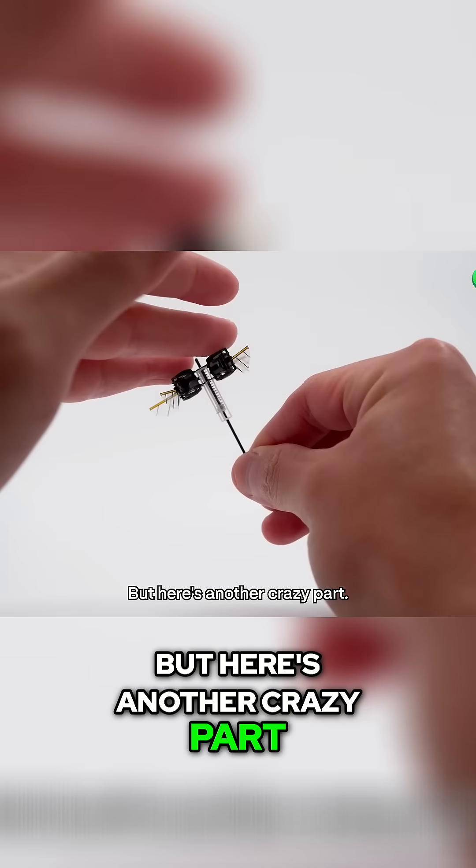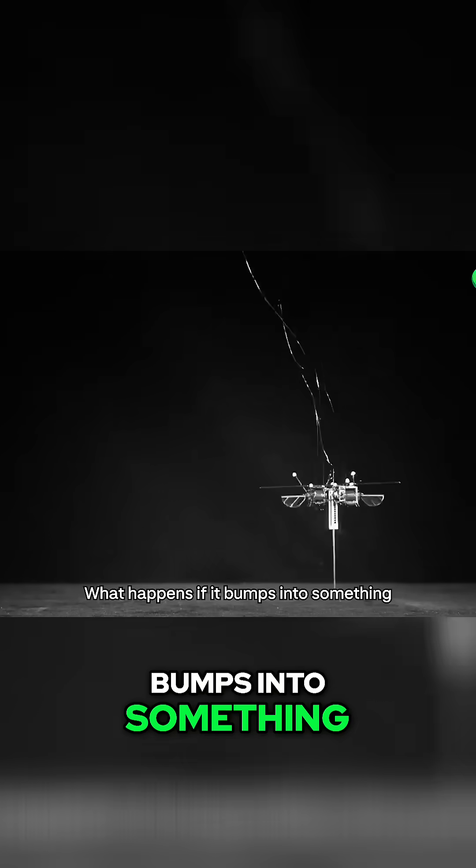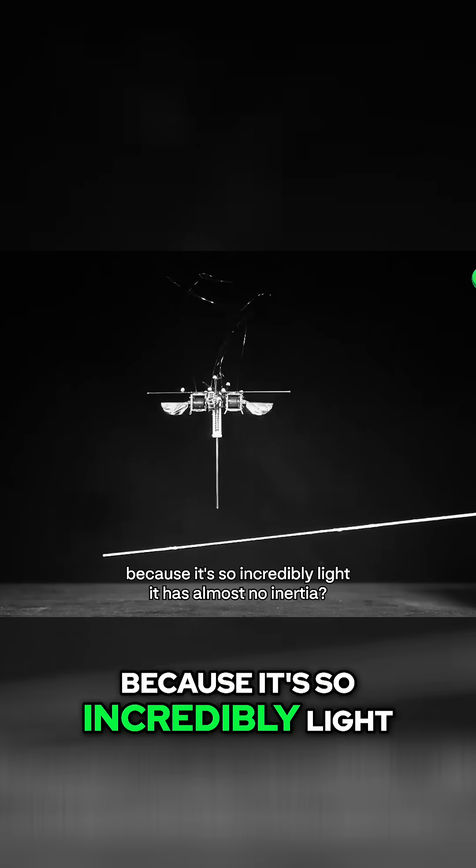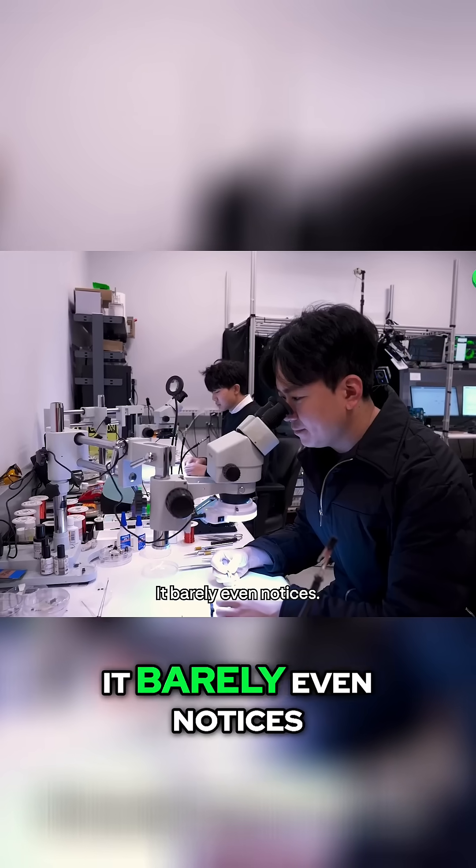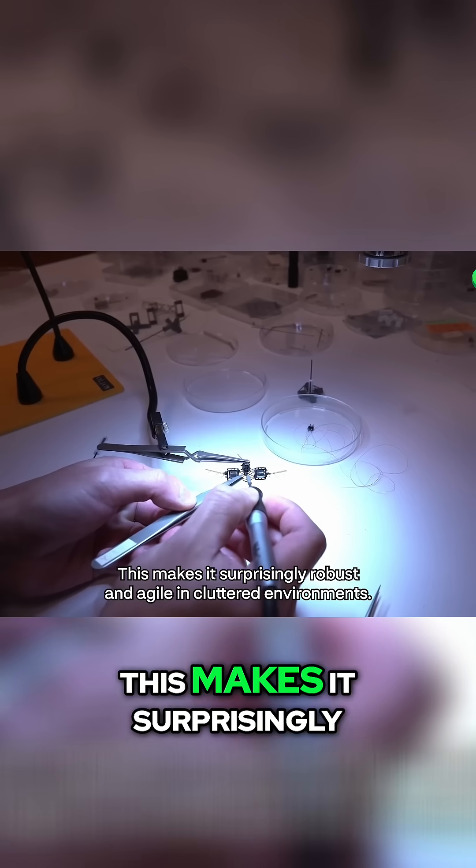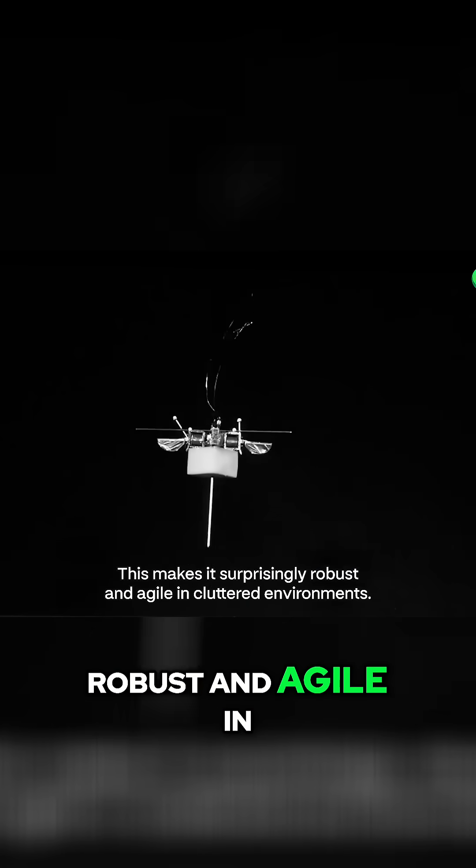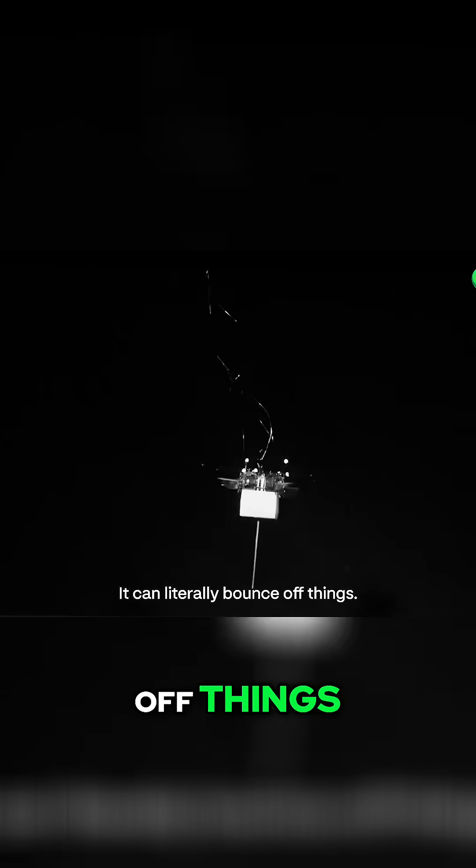But here's another crazy part. What happens if it bumps into something? Because it's so incredibly light, it has almost no inertia. Watch this collision, it barely even notices. This makes it surprisingly robust and agile in cluttered environments. It can literally bounce off things.